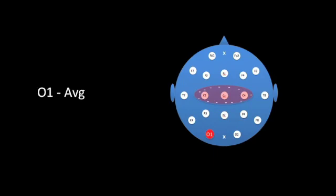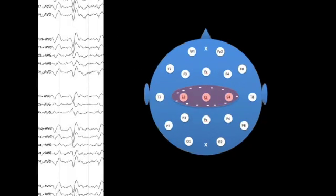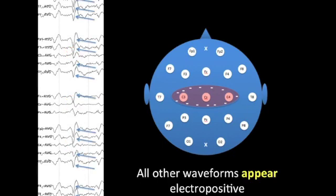When we take an electrode position not involved in this field and compare it to the average of the rest of the head, O1 in this example is neutral, but the average is relatively negative for the rest of the head. Therefore it will appear as though O1 is positive with respect to the average. When we switch to an average reference montage, while it is true that C3, C4, and Cz are relatively electronegative, there is also the false impression that all other waveforms are electropositive. This is not a reflection of any true electrical phenomenon, but rather an example of reference contamination.